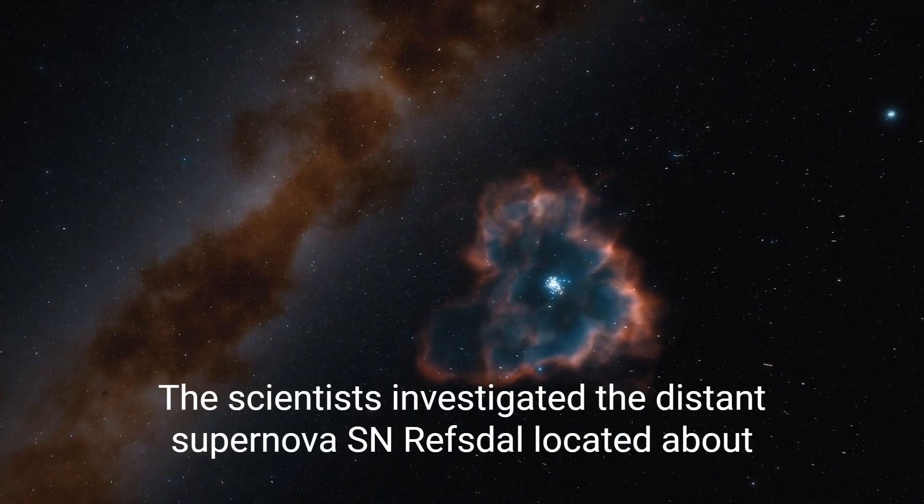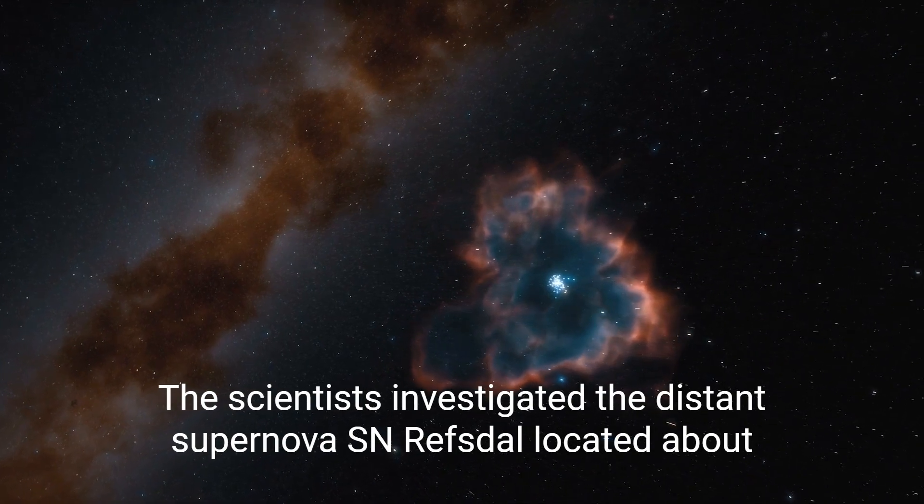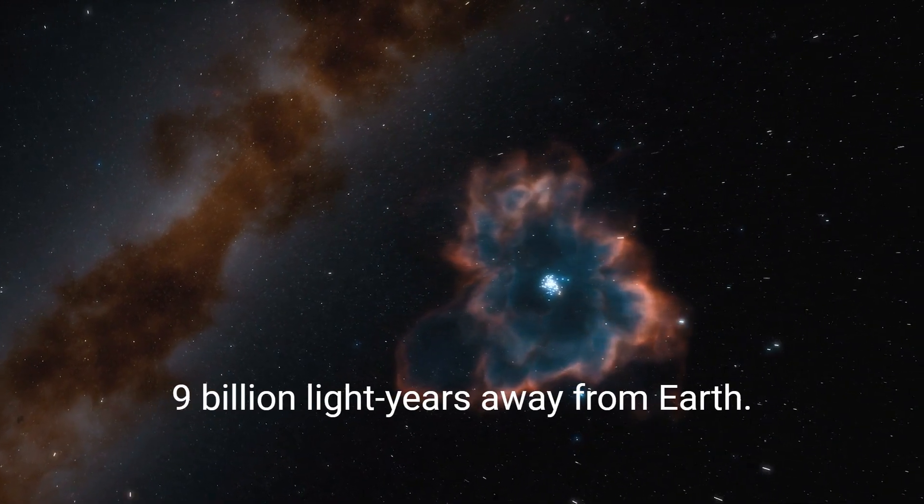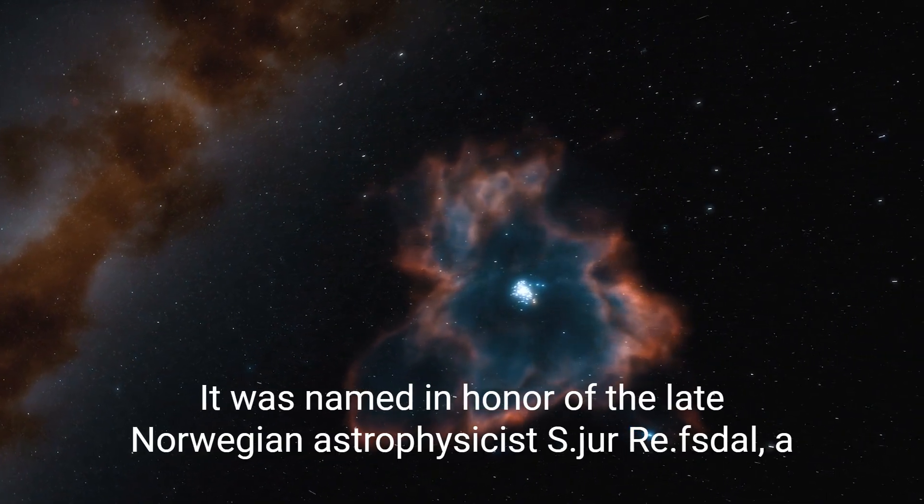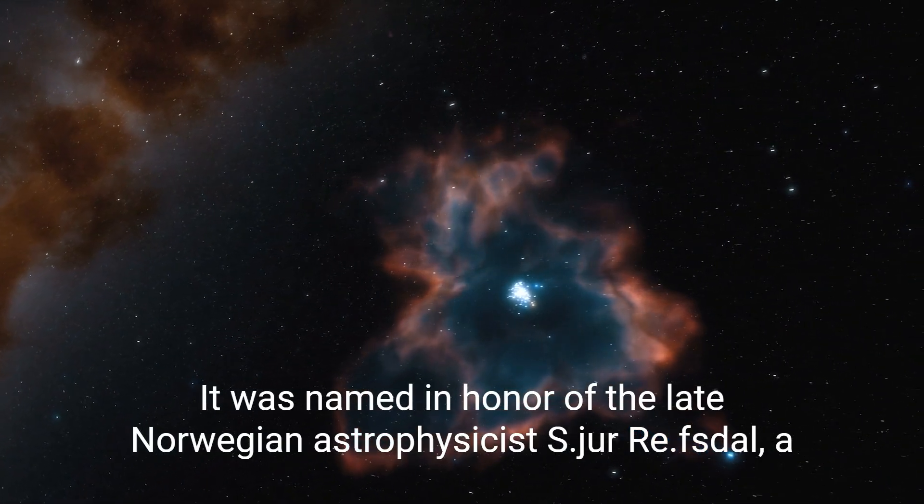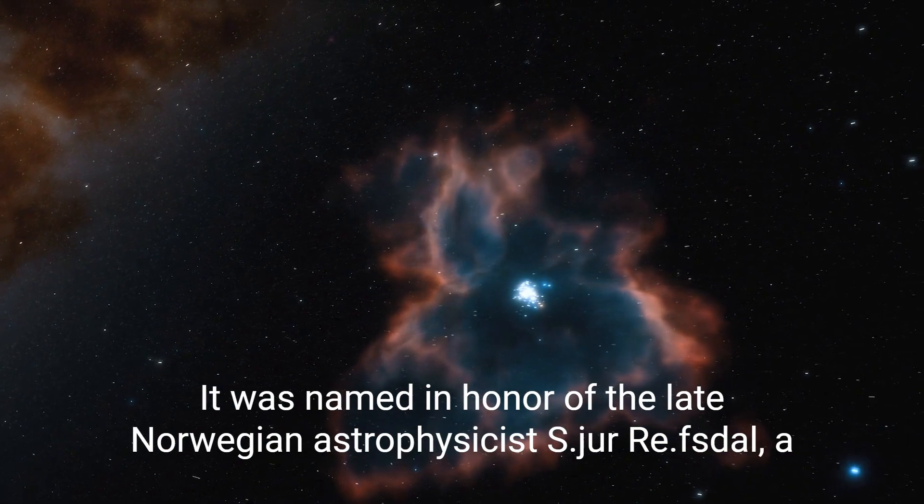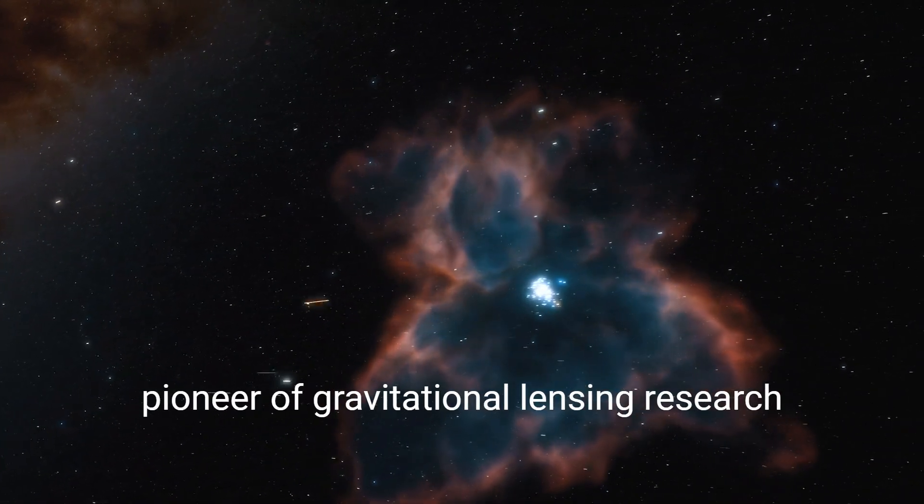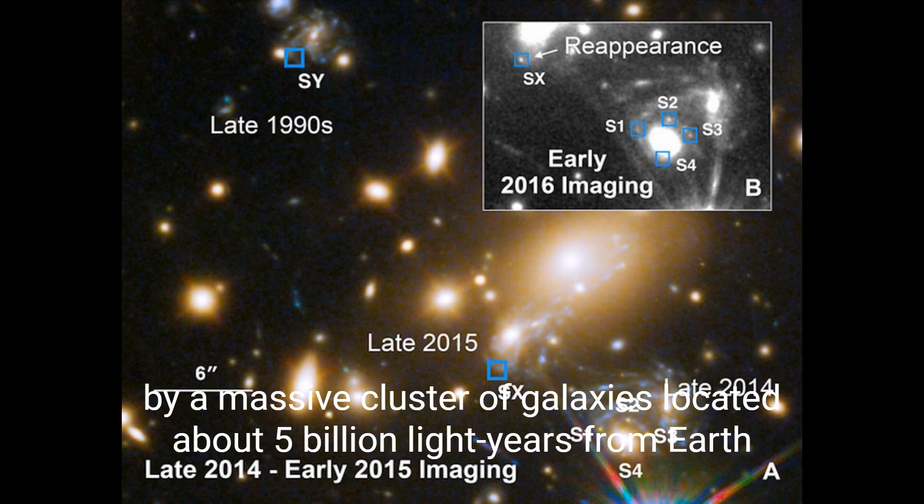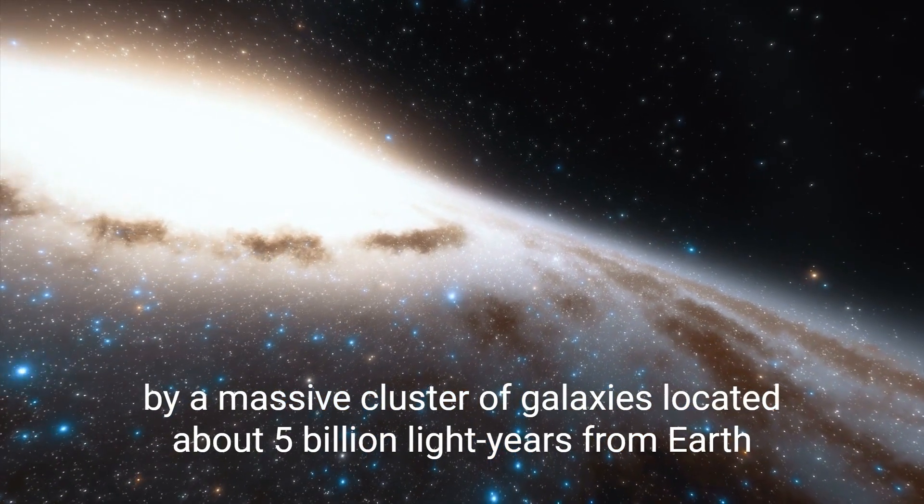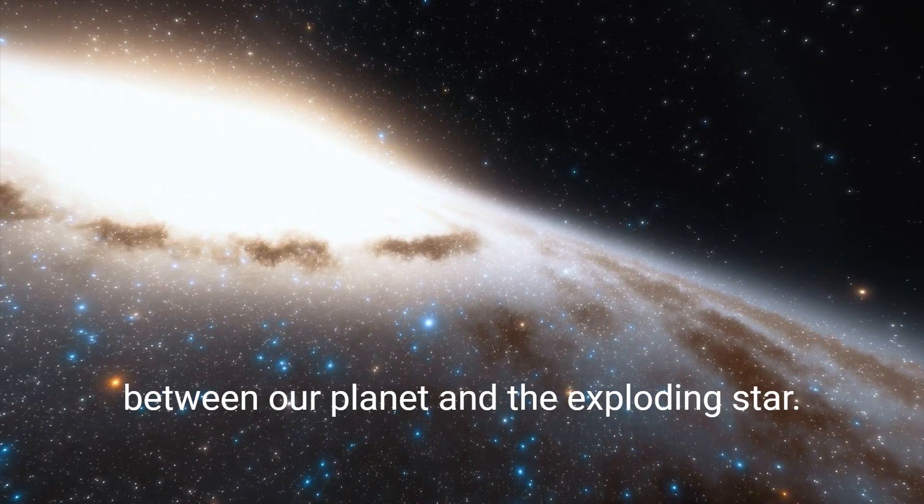The scientists investigated the distant supernova SN Lifestyle, located about 9 billion light years away from Earth. It was named in honor of the late Norwegian astrophysicist Escher Riefestal, a pioneer of gravitational lensing research. The researchers examined five gravitationally lensed images of SN Lifestyle generated by a massive cluster of galaxies located about 5 billion light years from Earth, between our planet and the exploding star.